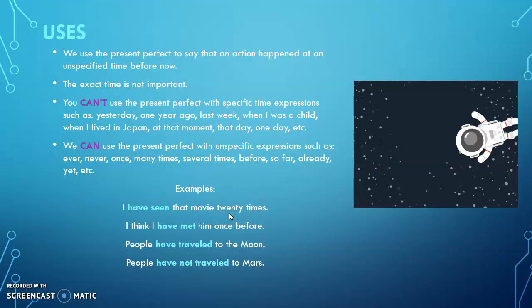For example, when you say 'I have seen that movie 20 times,' that means from the past until now you have seen that movie 20 times. Aquí lo que queremos decir es 'he visto esta película 20 veces,' lo cual les da la idea de que en el pasado ya habían realizado esa acción, pero hasta el presente siguen viendo esa película. No es una acción que haya terminado; empezó en el pasado y es visible en el presente. Lo mismo con 'I think I have met him once before' — a esta persona la conocieron en el pasado, no recuerdan exactamente cuándo, pero en el presente es visible el resultado.